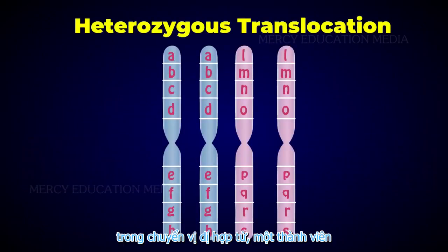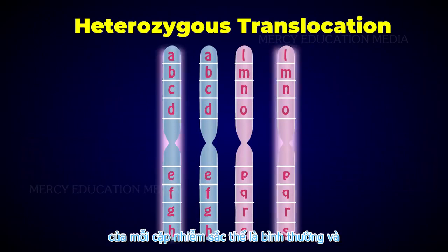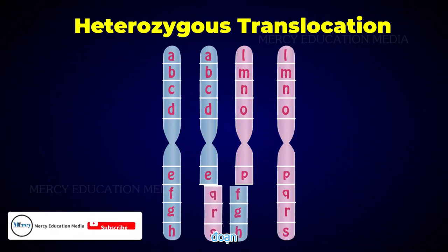In heterozygous translocation, one member of each pair of chromosomes is normal and the other member is with interchanged segment.